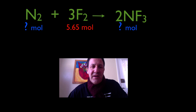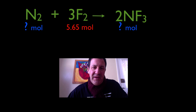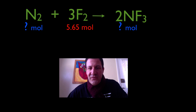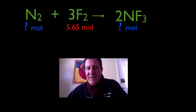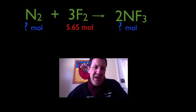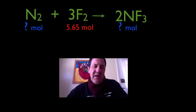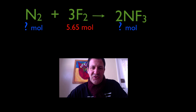We need to remember that any chemical equation shows us a molar or particle relationship. So one mole of N2 plus three moles of F2 will yield two moles of NF3. We're going to remember that that's a molar relationship and not a gram relationship or a mass relationship.